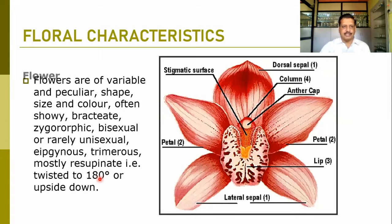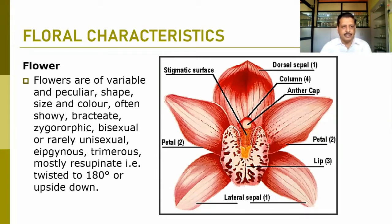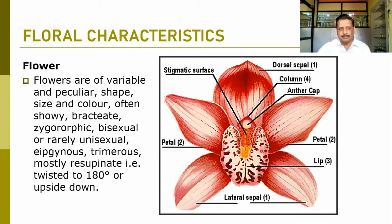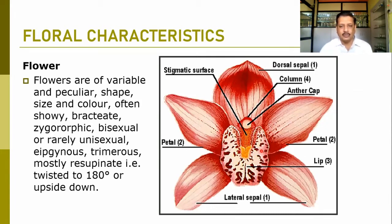This is the typical structure of the flower. The flowers are mostly variable in peculiar shape — zygomorphic flowers in the family Orchidaceae. They are often showy because of beautiful coloration. Often bracteate, zygomorphic, and mostly bisexual. Rarely we find unisexual flowers. They are mostly epigynous, so the ovary is inferior. Trimerous type — tricarpellary ovary. The ovary is twisted to 180 degrees or upside-down position in Orchidaceae flowers.